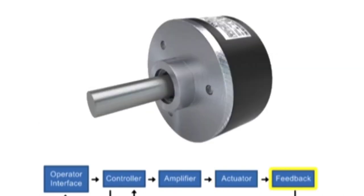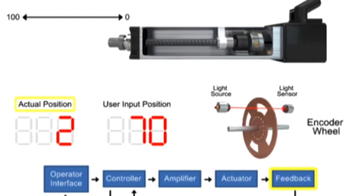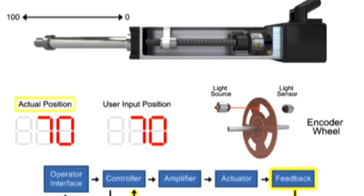The feedback device, usually an encoder or position sensing device, recognizes the motor position and reports the result back to the controller. As the encoder rotates, position and speed information are relayed to the controller and compared to the user input.